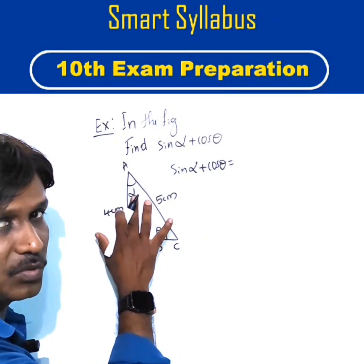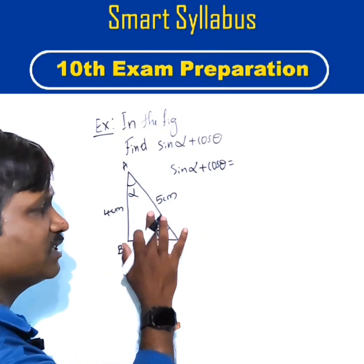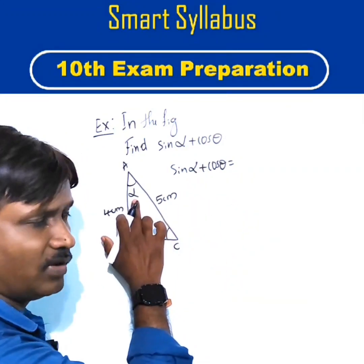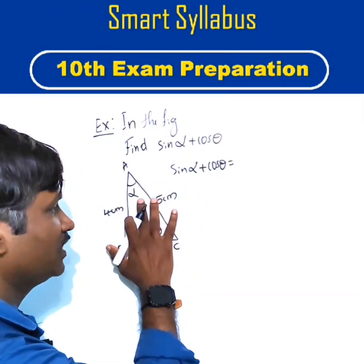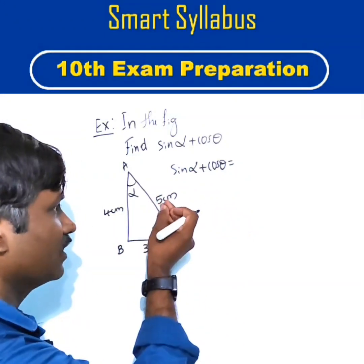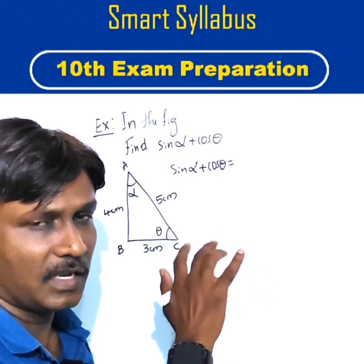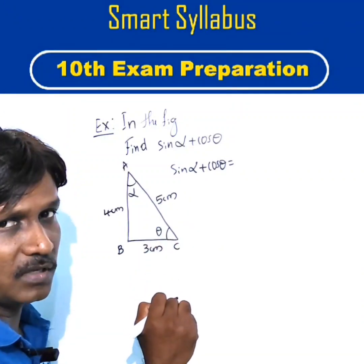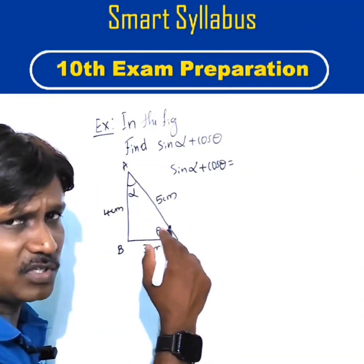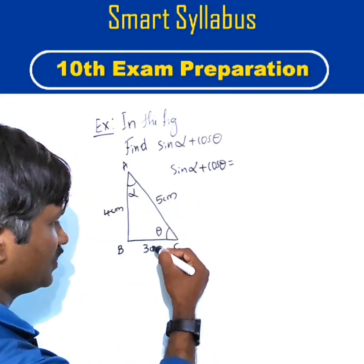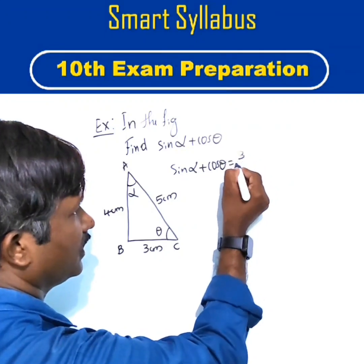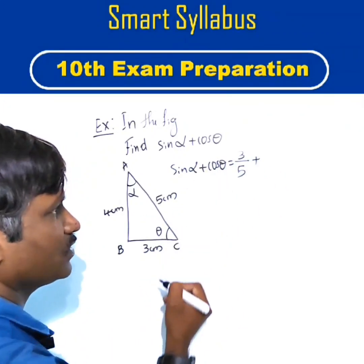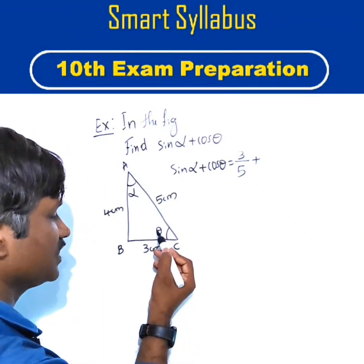For sine alpha, you use trigonometry according to the angle alpha. Alpha is just a symbol similar to theta — we can't use two thetas for two different angles, so one is called alpha and the other theta. The ideas of trigonometry remain the same regardless of the symbol. Sine alpha = opposite upon hypotenuse. The side opposite to alpha is 3 cm, and the hypotenuse is 5, so sine alpha = 3/5.